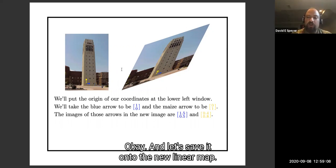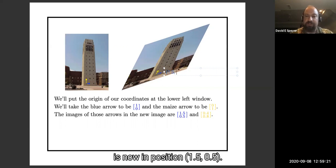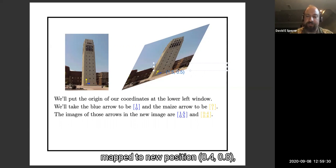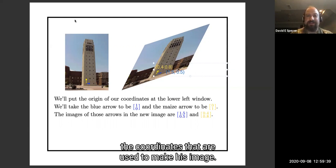Let's say that under the new linear map, the vector which used to be 1, 0 is mapped to position 1 and a half, 0.5. So this image vector is now in position 1.5, 0.5. And let's say that the maize vector is mapped to new position 0.4, 0.8. Those are actually the coordinates I used to make this image.